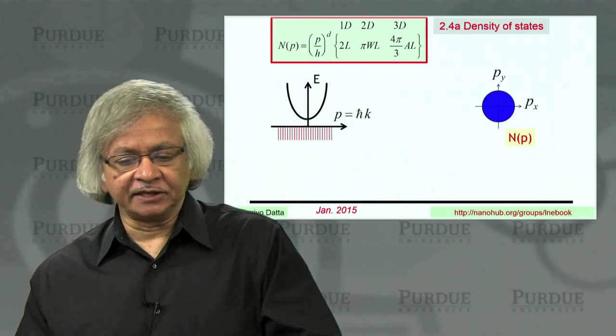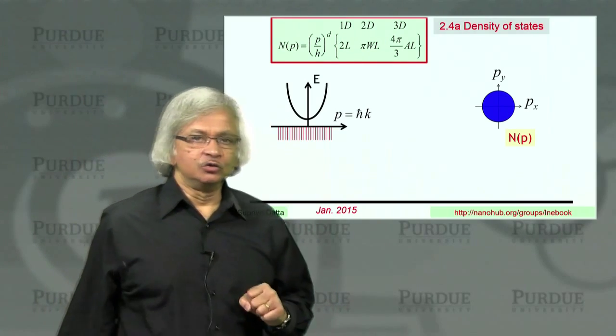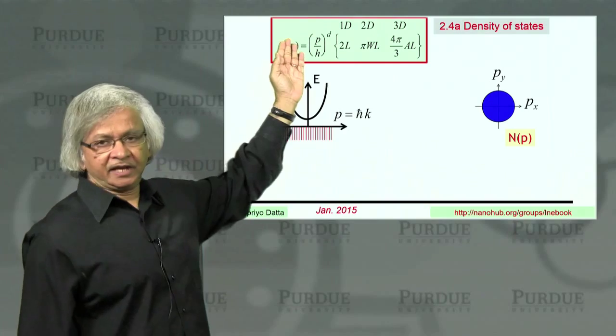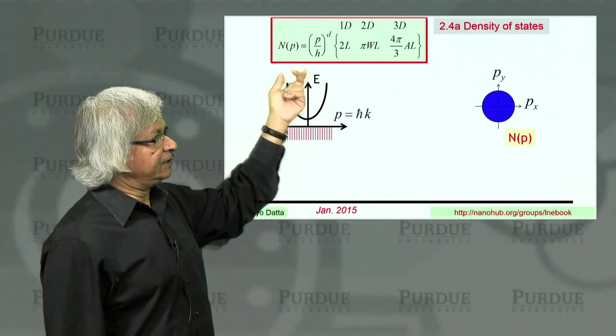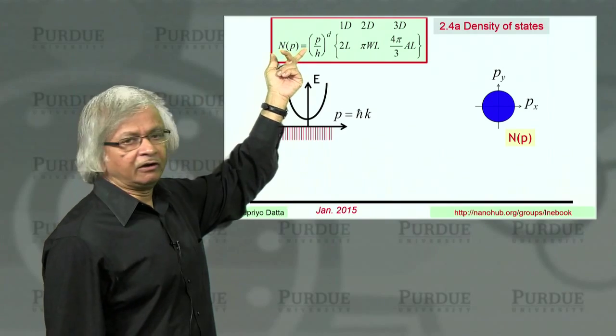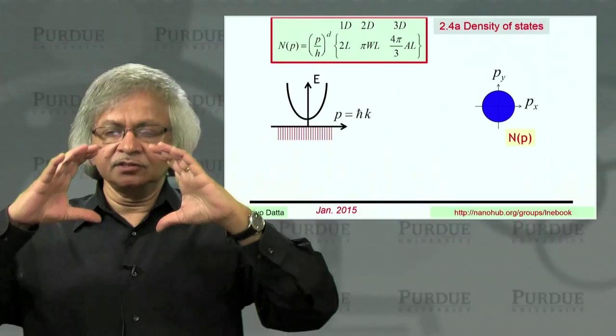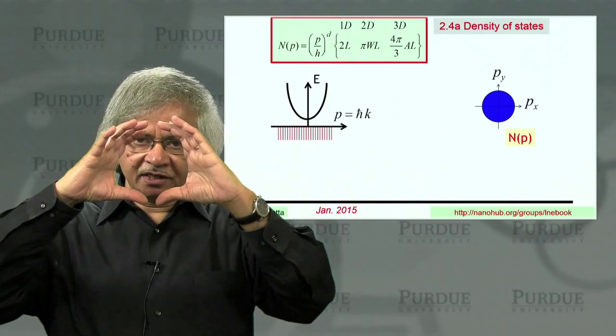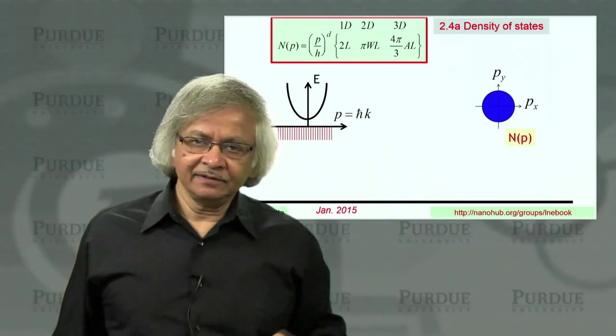Now what we did in the last lecture is we discussed this rule for counting states using the periodic boundary condition and obtained this function called N of p. It tells you how many states are allowed which have a momentum less than p.